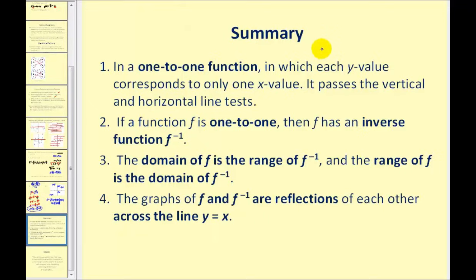In summary: in a one-to-one function, each y value corresponds to only one x value, and it passes both the vertical and horizontal line tests. If a function f is one-to-one, then it has an inverse function. The domain of f is the range of f inverse, and the range of f is the domain of f inverse, because we interchange the x and y variables. The graphs of f and f inverse are reflections of each other across the line y equals x. I hope you found this video helpful, thank you for watching.